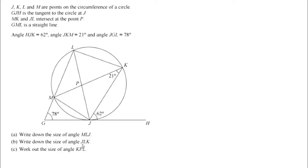B, write down the size of angle JLK, so JLK, and then C, write down the size, sorry, work out, so that's an important difference, work out the size of angle KPL, so KPL, this kind of central angle here.